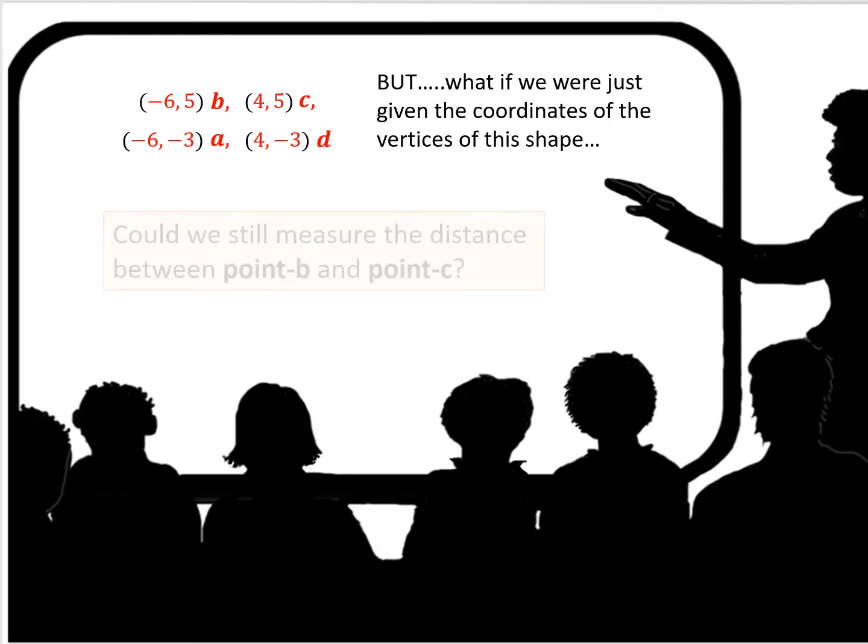But what if we were just given the coordinates of the vertices of this shape? We're just given the points and their coordinates. Could we still measure the distance between point B and point C?